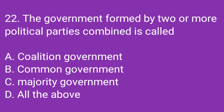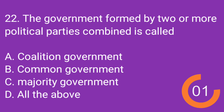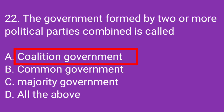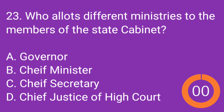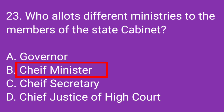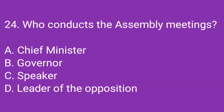Question number 22: The government formed by two or more political parties combined is called? Correct answer: Coalition government. Question number 23: Who allots different ministries to the members of the state cabinet? Correct answer: Chief Minister. Question number 24: Who conducts the assembly meetings?